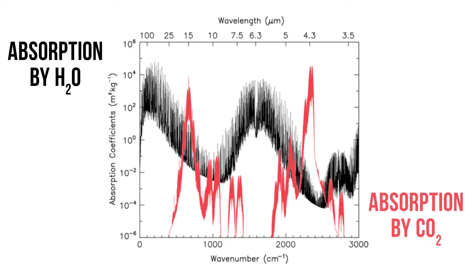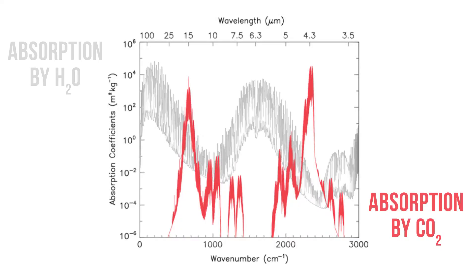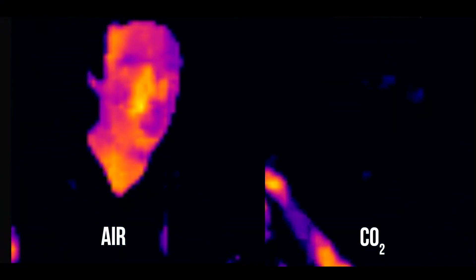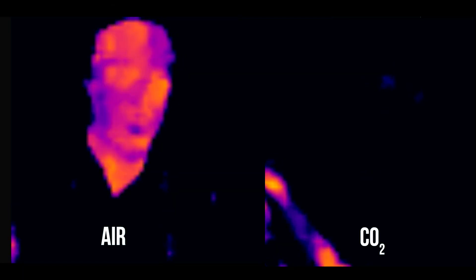Of course the balloon with air in is much more like our atmosphere than the balloon which is pure carbon dioxide, but this demonstration does let you see how greenhouse gases work. Carbon dioxide doesn't absorb all the infrared passing through it but a certain proportion. When we use the carbon dioxide balloon versus the normal air balloon you can see that the carbon dioxide balloon shows a significant reduction in infrared radiation reaching the camera.